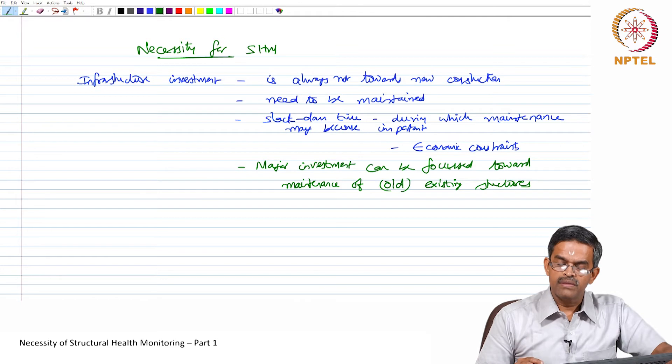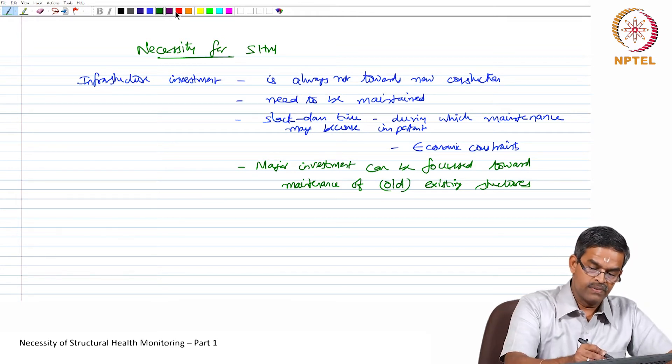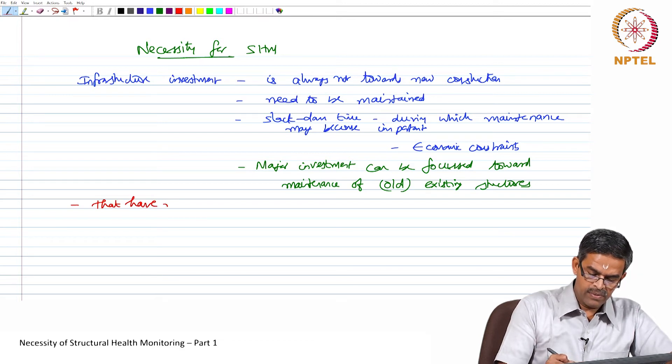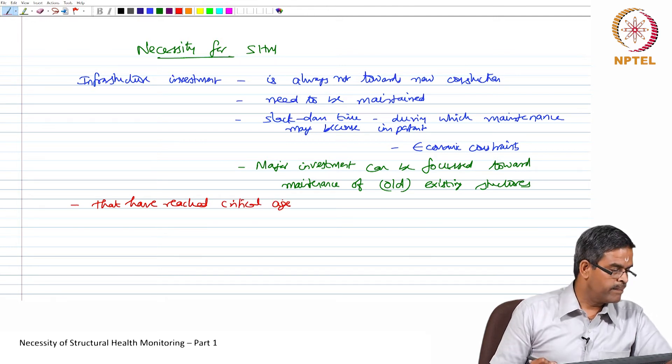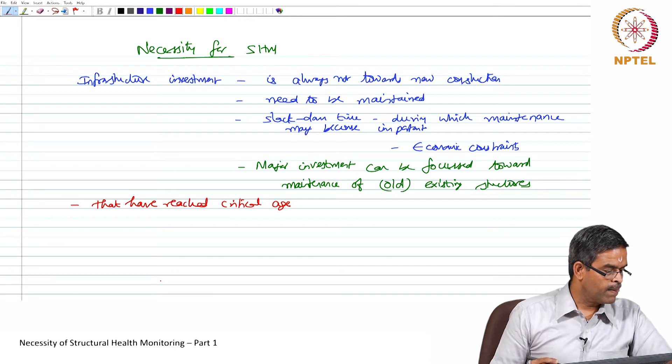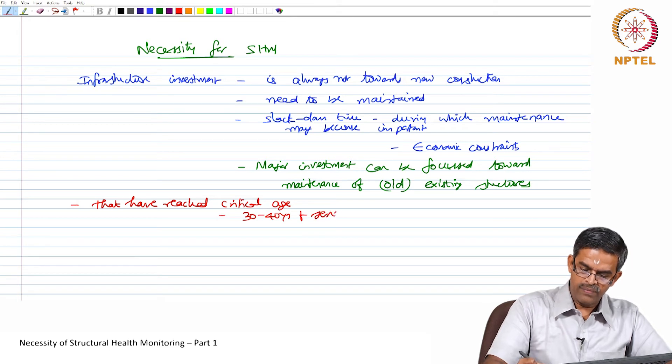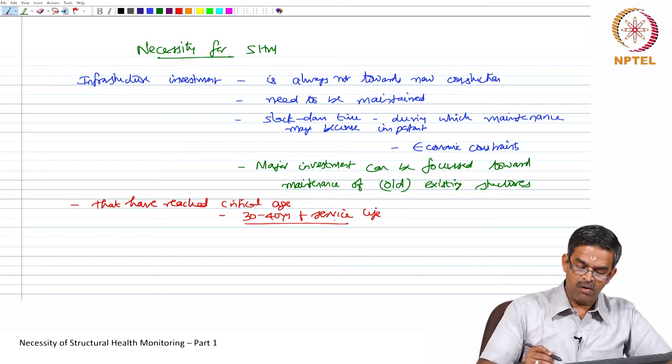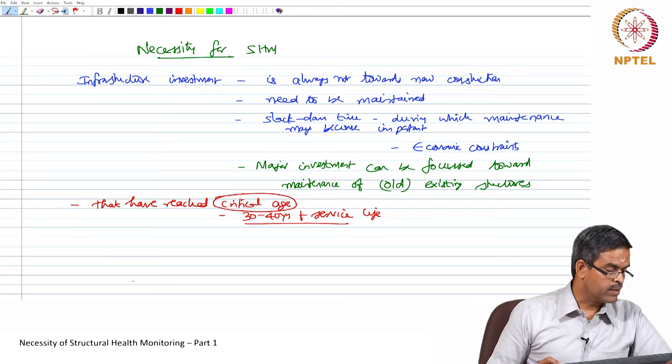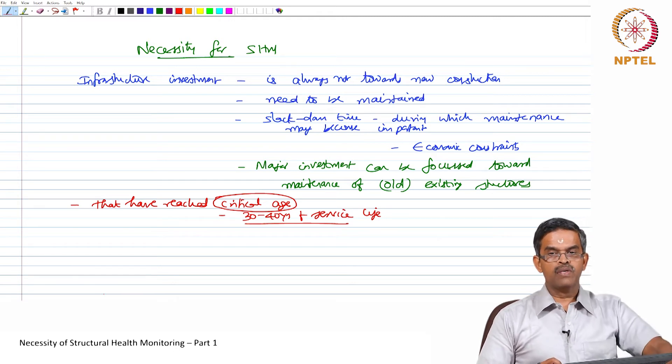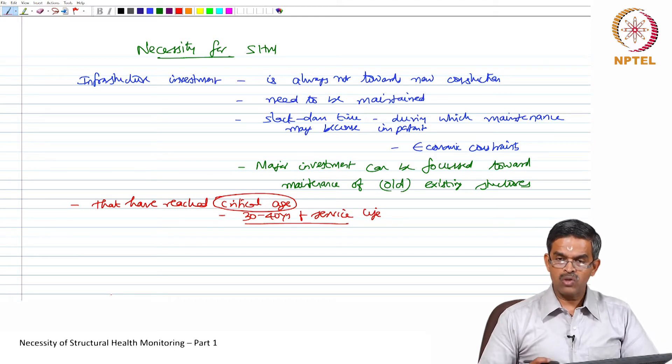How do you identify the structures which need critical maintenance? Structures that have reached critical age, maybe 30 to 40 years of service life, come under the span of criticality. Of course, it depends on material, type of loading, environmental conditions, and also degree of maintainability.